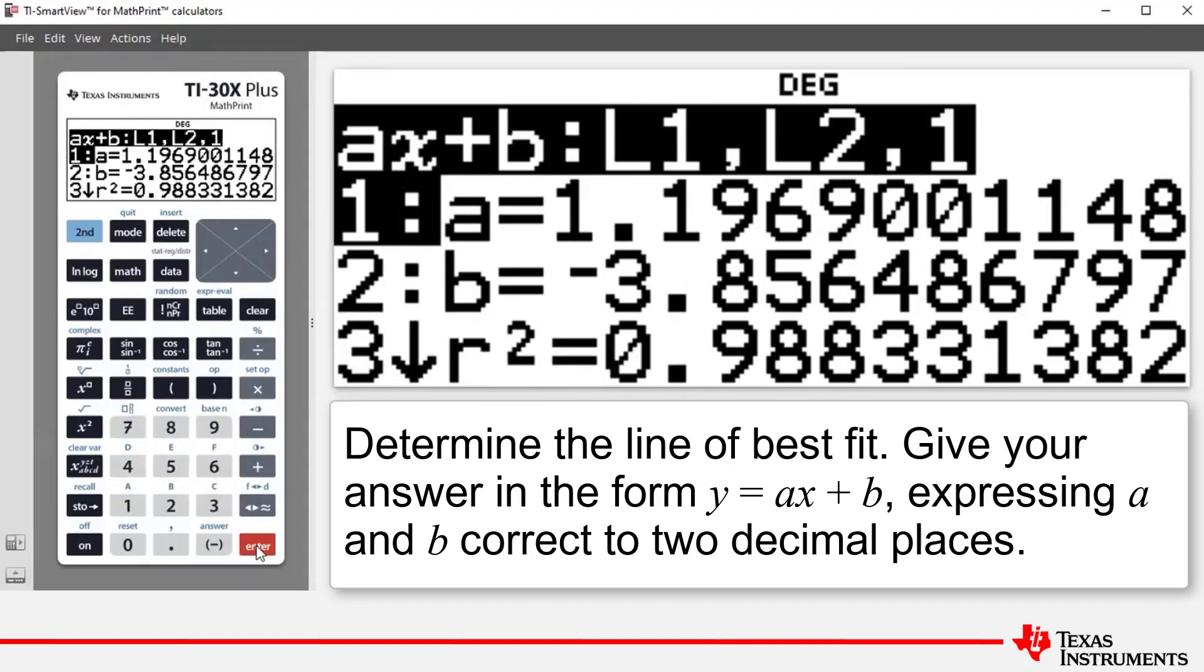To put this into context, the humerus length is equal to 1.20 times the femur length minus 3.86.